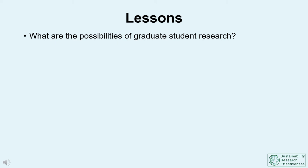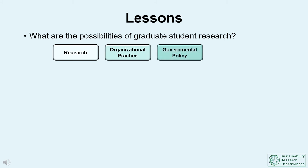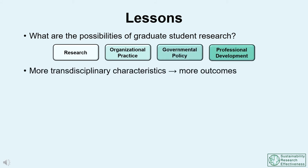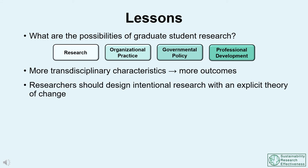These cases demonstrate that graduate research can contribute to diverse change processes in research, organizational practice, governmental policy, and professional development. We found that projects with stronger transdisciplinary elements had more pronounced outcomes. This suggests researchers seeking to make a difference should take the necessary time to fully understand the social problem and its context, identify key actors and processes to engage, and strategically design research to be more useful and used. Developing an explicit and detailed theory of change has proven to be a key ingredient of impactful research.